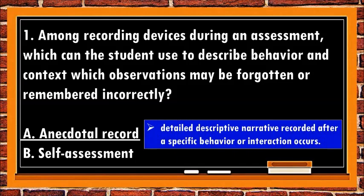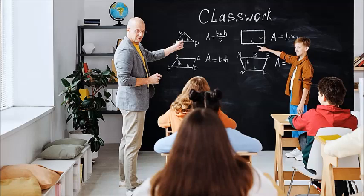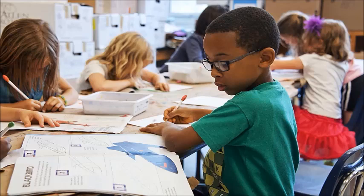The correct answer is a. Anecdotal record. An anecdotal record is a detailed descriptive narrative recorded after a specific behavior or interaction occurs. Anecdotal records inform teachers as they plan learning experiences, provide information to families, and give insights into identifying possible developmental delays.